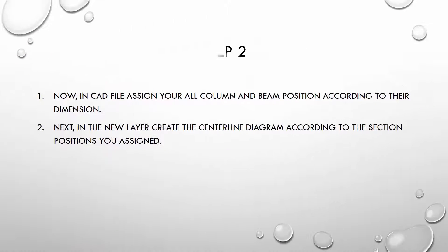Step 2: After removing all the text, dimensions, and detailing, we are only left with lines. Now assign column and beam positions according to their dimensions in our plan. Create a new layer and create a centerline diagram according to the section we had provided in our plan.